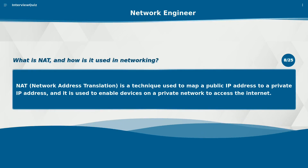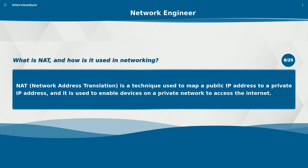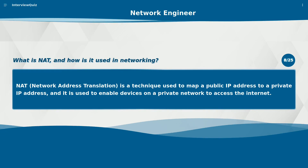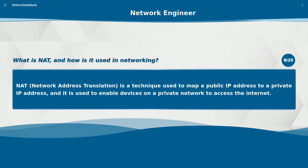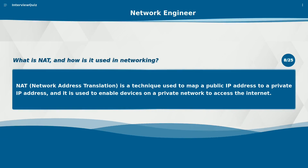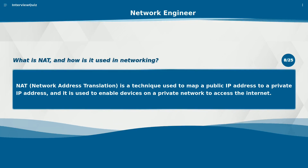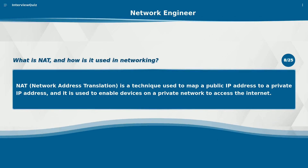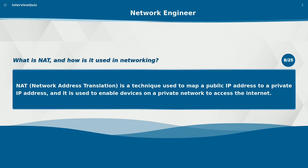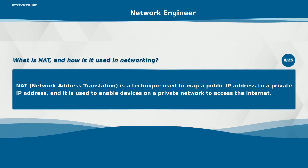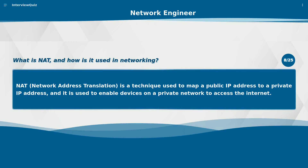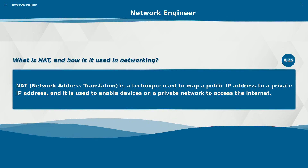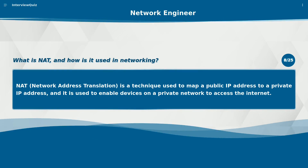What is NAT and how is it used in networking? NAT, network address translation, is a technique used to map a public IP address to a private IP address, and it is used to enable devices on a private network to access the internet.